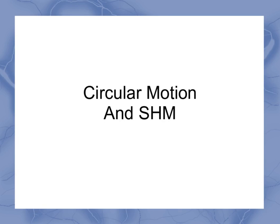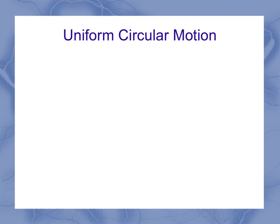So now we're going to introduce circular motion and simple harmonic motion, abbreviated SHM. In uniform circular motion, the motion is defined as motion in a circle at constant speed.